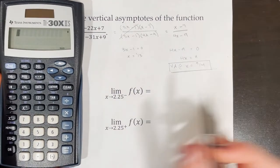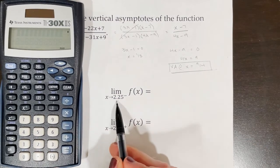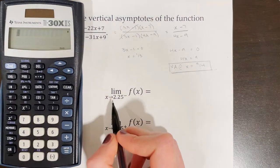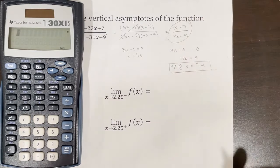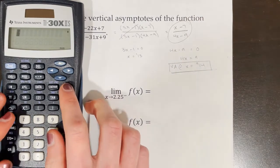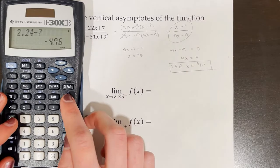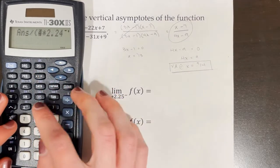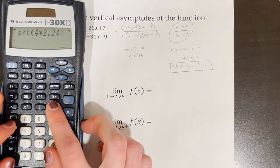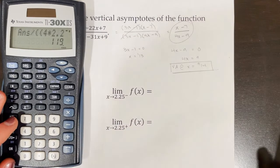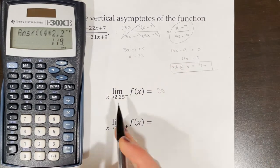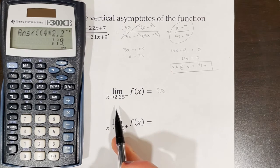Instead, we plug in a value very close to 2.25 on the left side, such as 2.24. Computing (2.24 − 7) / (4 × 2.24 − 9) gives 119, which is large enough to indicate the function is approaching positive infinity as we get closer and closer to 2.25 from the left.